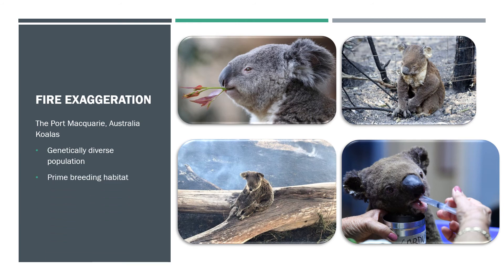The Port Macquarie koalas are a genetically diverse population, and the area in which they inhabit is prime breeding habitat. However, it is a small area bordered by agriculture and fragmented from any other suitable habitats. So when it suffered from a wildfire, the population was drastically reduced, leaving an already at-risk species in an even more vulnerable position.